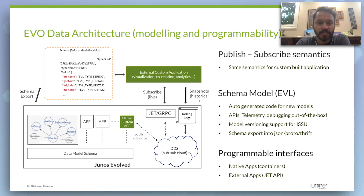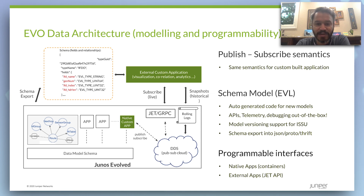Many of our customers, particularly in the cloud space, like to implement their own applications and integrate things into the system. How can they take advantage of the PubSub system for their own applications versus just our internal applications? This falls out of the approach where you formalize all interactions using this PubSub model. All interactions have a structured schema — it's not opaque blobs of information floating around in the internals of the system. These already have a well-defined structure. What we've done is taken this a step further by providing gRPC-based APIs through which you can tap into this PubSub system.